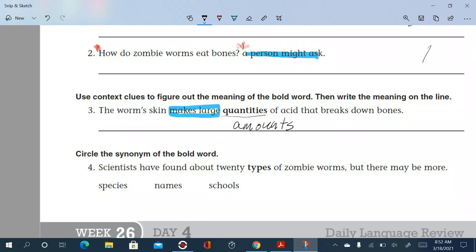Circle the synonym of the bold word. Synonym means the same. Alright? Of the bold word, which is types. We need one that means the same as types. Scientists have found about 20 types of zombie worms. But there are many more. What word down here means the same as the type? Is it species, names, or schools?